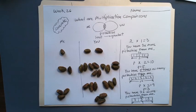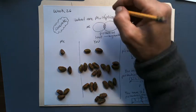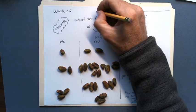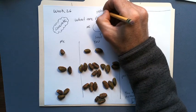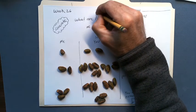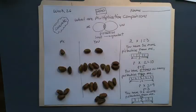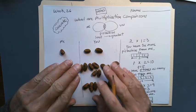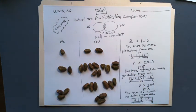I hope you can find something at home that you can make models with — something small that you can follow along with these notes. This part you don't have to send back. This is just a concrete example of what we mean when we're talking about multiplication comparisons.